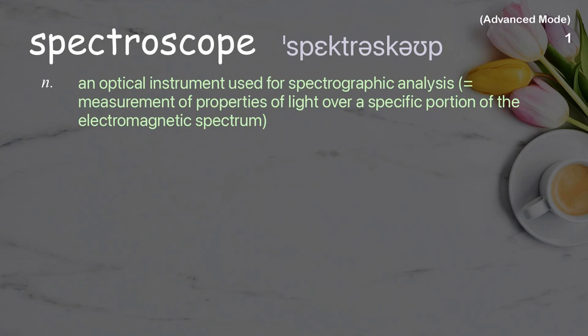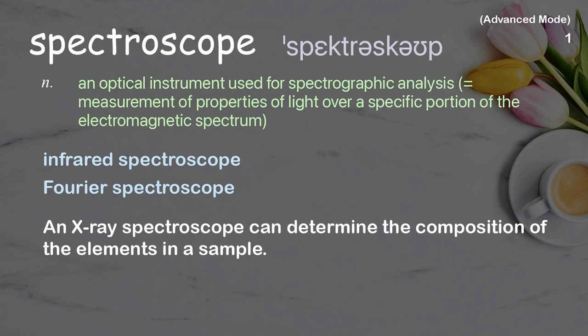Spectroscope: An optical instrument used for spectrographic analysis, meaning measurement of properties of light over a specific portion of the electromagnetic spectrum. Examples: Infrared spectroscope, Fourier spectroscope. An X-ray spectroscope can determine the composition of the elements in a sample.